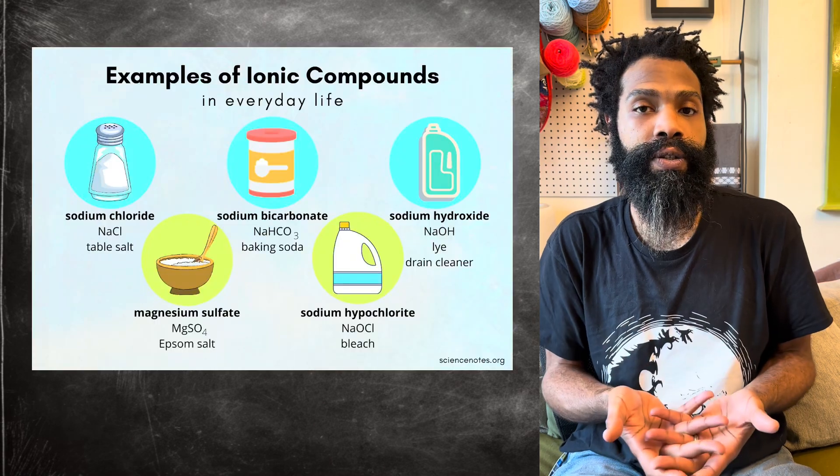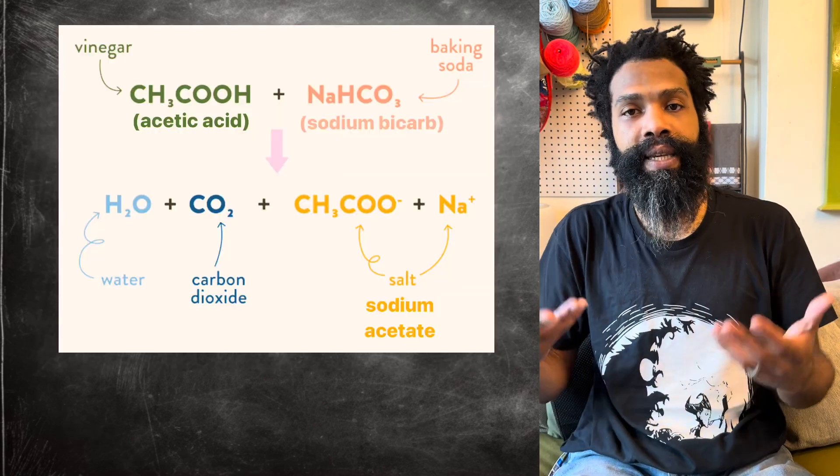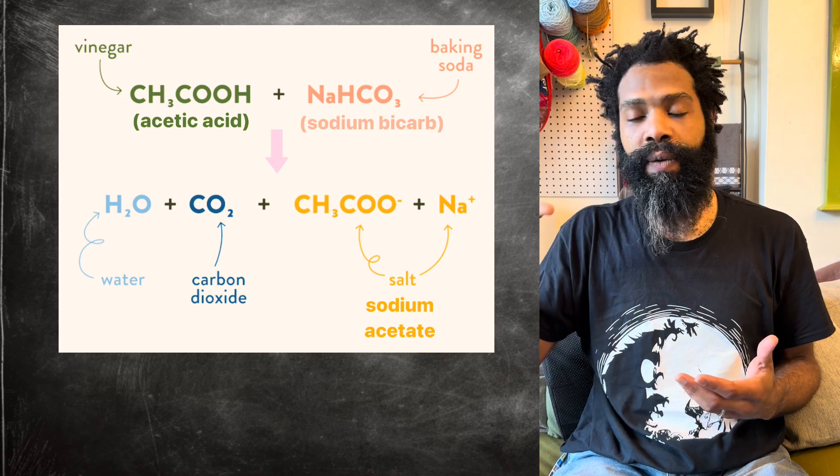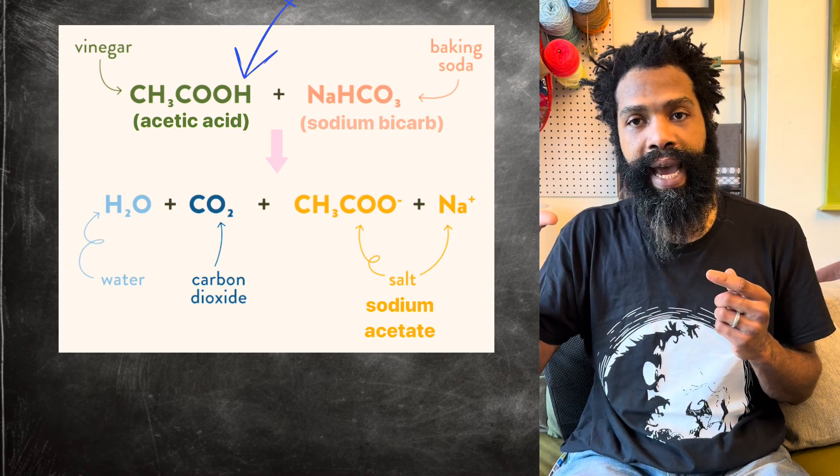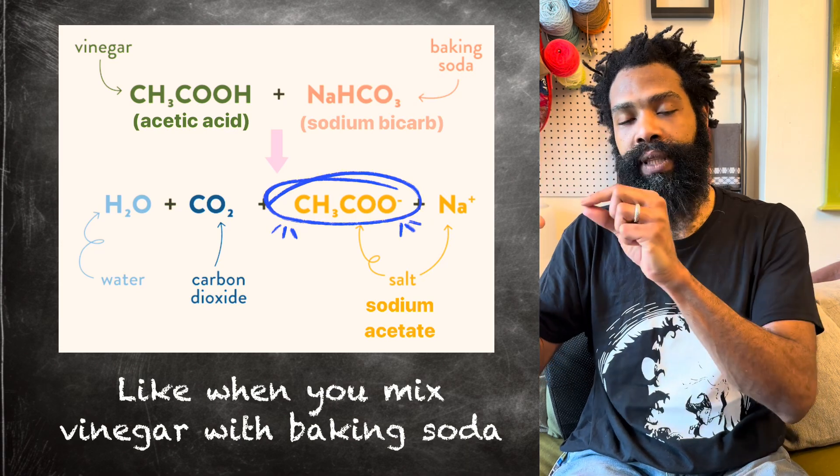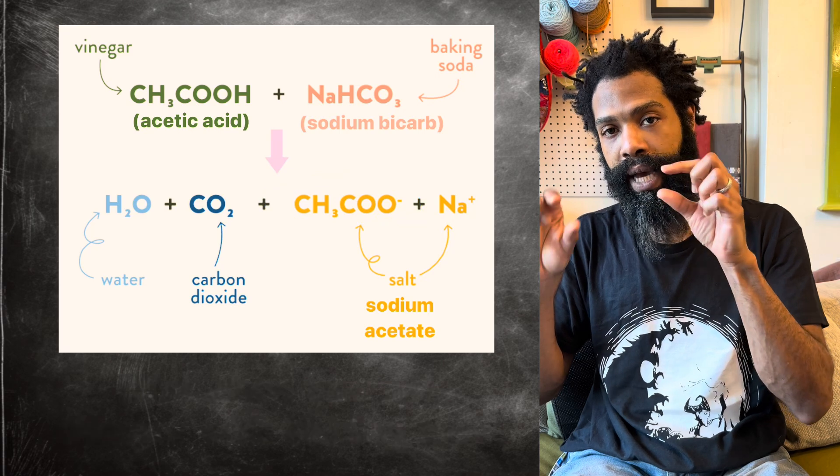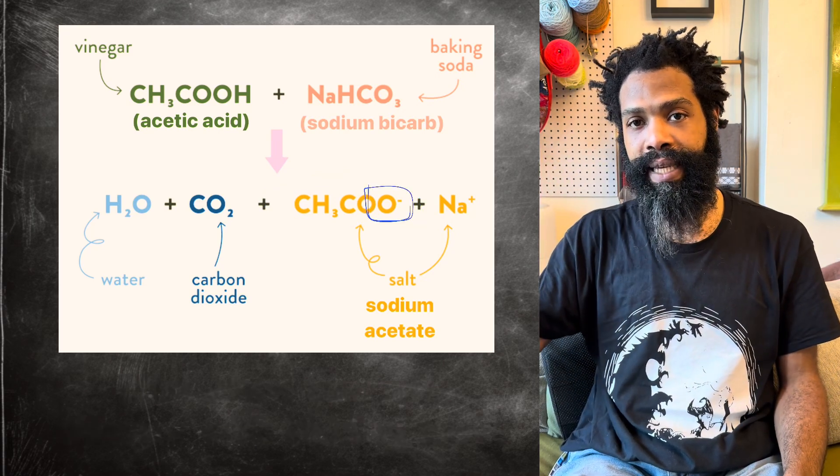You can have salts that are comprised of other molecules as well. For example, the acetic acid in vinegar. If you take one of the protons away from the acetic acid, it becomes what's called the acetate anion. Because you took that proton away, but the electrons that were shared between that proton and that oxygen, they stay with the acetate.